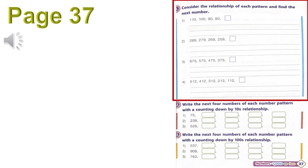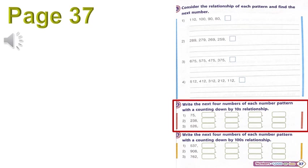Number one: consider the relationship of each pattern and find the next number — this is counting down by tens. Please answer number 1 to number 4. Number two: write the next four numbers of each number pattern with a counting down by tens relationship. Number three: write the next four numbers of each number pattern with a counting down by hundreds relationship.